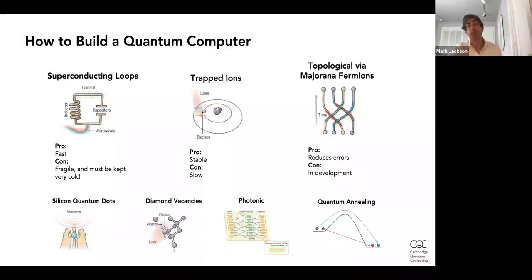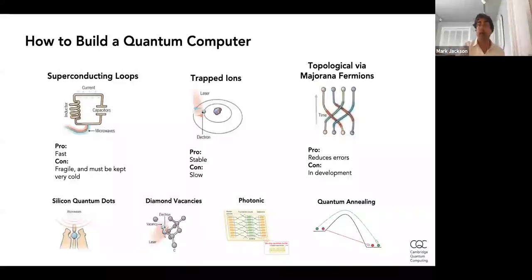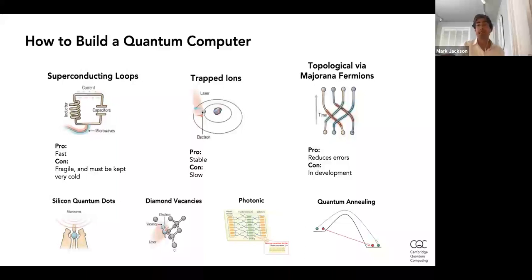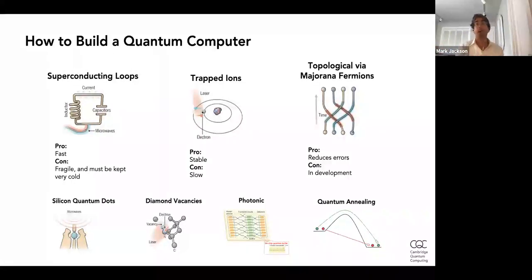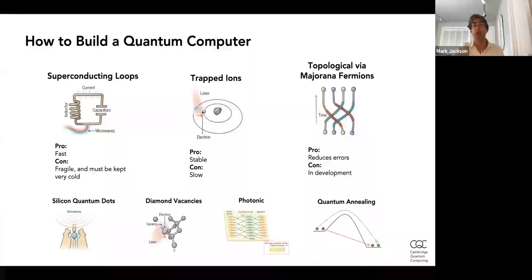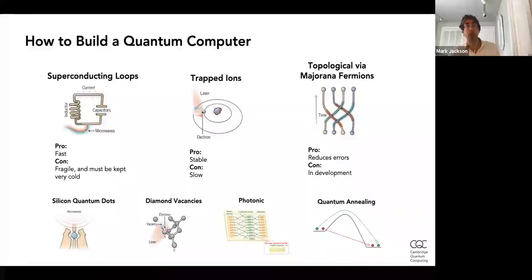A third approach is the topological approach, using special particles called Majorana fermions. These have an amazing property: they remember when you move them around each other — like braiding hair, where the hair remembers if it's been braided. For qubits, this is fantastic because you can cleverly encode the qubit's value in this braiding. The advantage is almost zero error. The disadvantage is that this technology is far behind the others — right now only Microsoft is commercially developing it, and the public hasn't seen even two qubits working from this approach. If they could get it to work and scale, it would really be amazing.